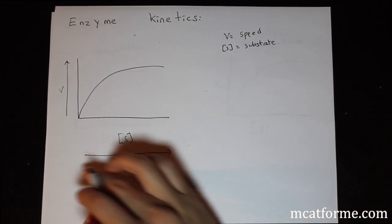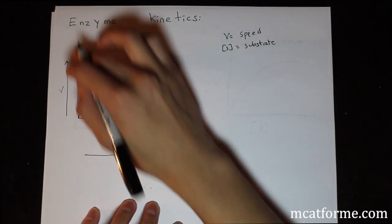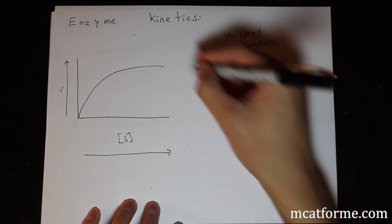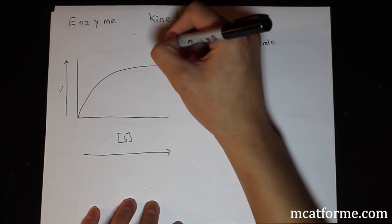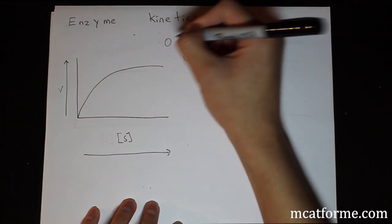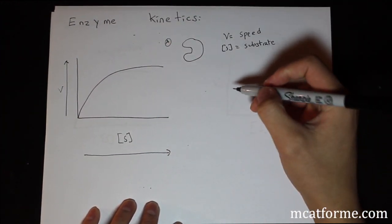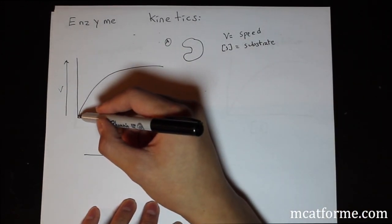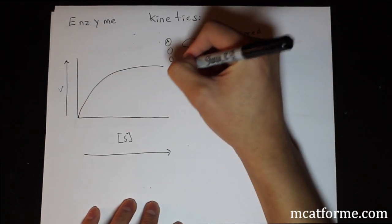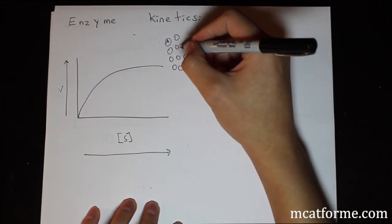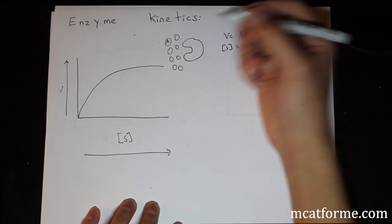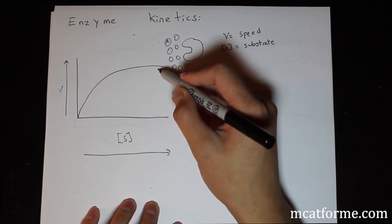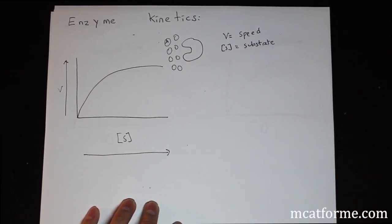What that means is that as the substrate increases, the speed of the enzyme or enzyme activity will increase, and that should make sense. If you have this enzyme and only one substrate, the chance of it finding this active site is very unlikely. So the enzyme activity would be very low. But now imagine we increase this by 10. The chances of one of these getting into this active site is much more likely. So that's pretty much how it works.